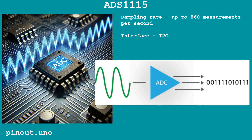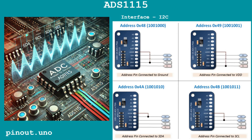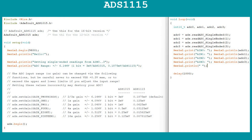Sampling rate: up to 860 measurements per second. The interface is I2C, which simplifies connection to Arduino, ESP32, and other microcontrollers. Arduino IDE support is available via a well-documented library called Adafruit ADS1015. It includes three example sketches: comparator, single-ended inputs, and differential mode. Here is an example using single-ended inputs.